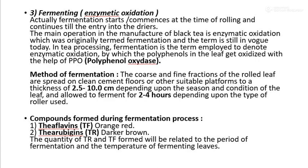Fermentation actually starts at the time of rolling and continues until the drying stage. The main operation in the manufacturing of black tea is enzymatic oxidation, which was originally termed fermentation and the term is still used today. Fermentation denotes enzymatic oxidation by which the polyphenols in the leaf get oxidized with the help of polyphenol oxidase.